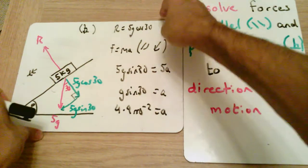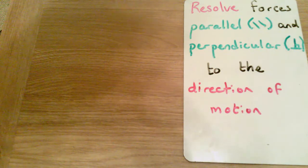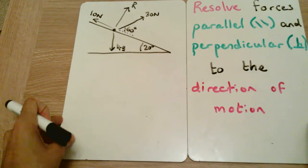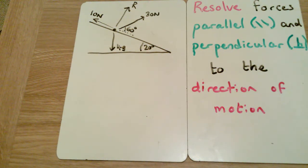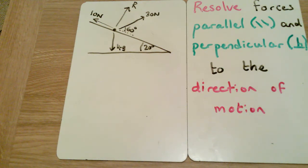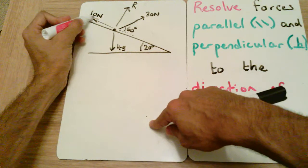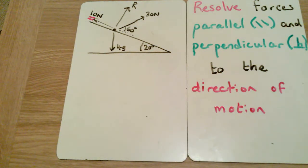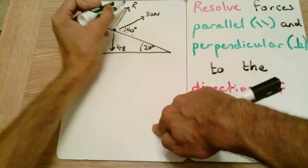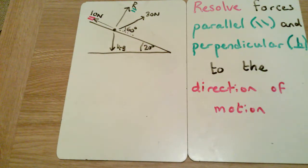Now let's build up to a more challenging example following the same principle. We've got forces in multiple directions. Any time you do a question involving resolving forces on an inclined plane, you need to split forces into parallel and perpendicular components. There are two forces that do not need to be resolved because they are already in the correct directions.